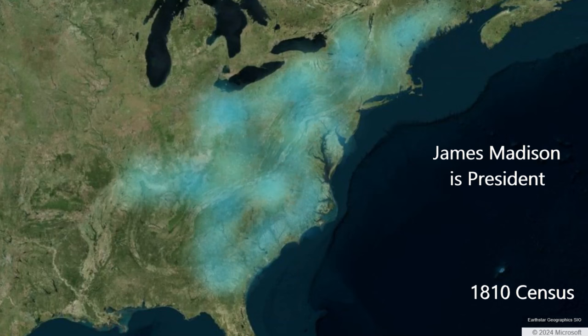In 1810, James Madison is the president. The United States constitutional government, which Madison had helped invent, has been functioning for 20 years. The country continues to expand westward.